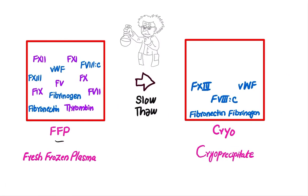Fresh frozen plasma and cryoprecipitate are both components of plasma. When slow thawing of the fresh frozen plasma is done, cryoprecipitate is made. Fresh frozen plasma contains all the clotting factors, but cryoprecipitate only contains concentrated forms of some clotting factors. 'Cryo' means little or some, and 'precipitate' means concentrated — so cryoprecipitate is a concentrated portion of the plasma.